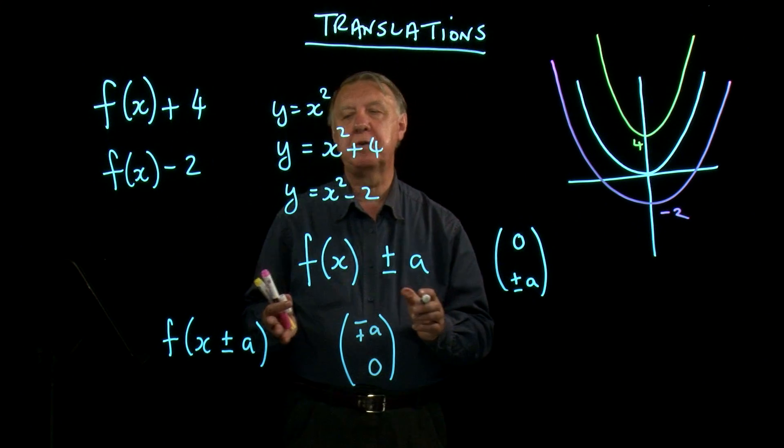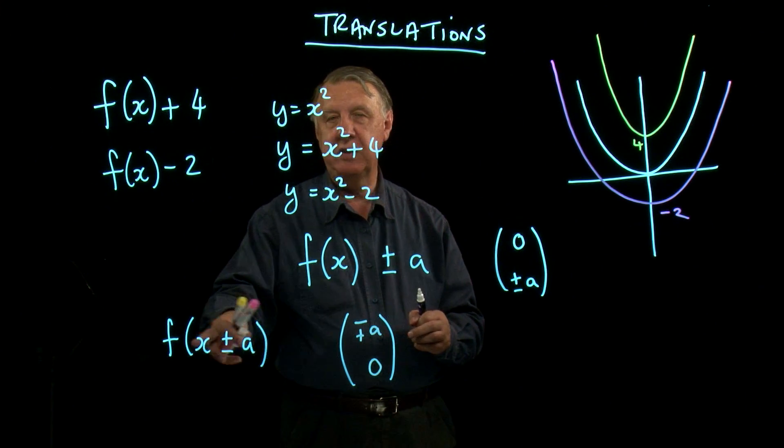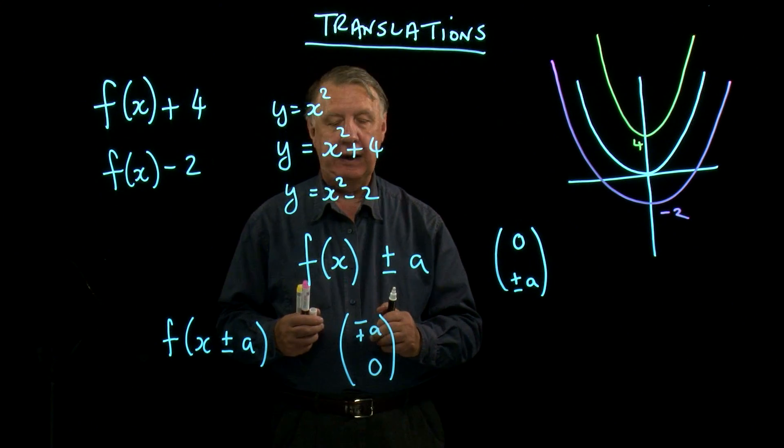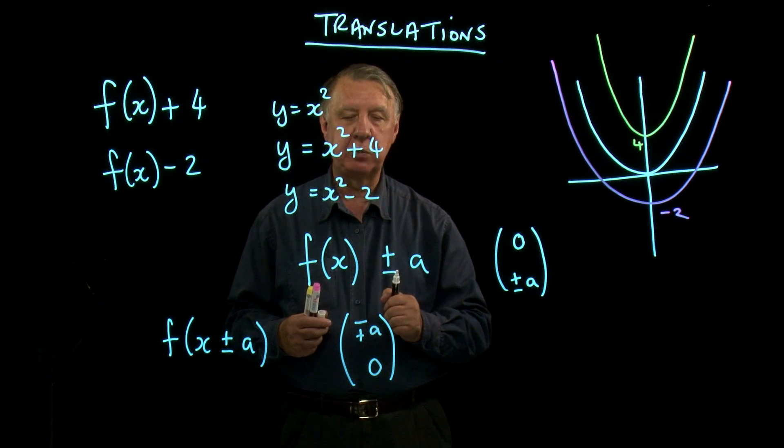So two types of translation of functions, one by messing around inside the bracket, and the other type, the y direction, by messing around outside the bracket.